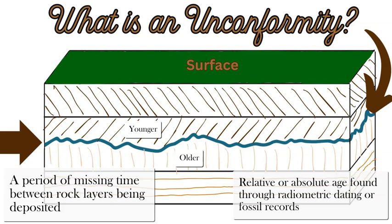An unconformity is basically where there was erosion and weathering occurring when that bottom layer was on the surface, and then over time it was buried under subsequent rock layers. This uneven interval between the younger rock layer above and the older one below is trapped in a time capsule, indicating a hiatus where there was no deposition of new sediments — only weathering and erosion. Then something happened where new deposition occurred and it became buried under new layers of sediment and rock material.